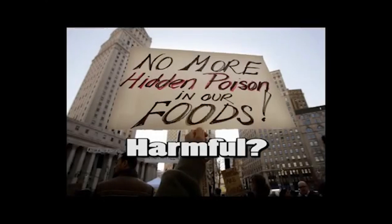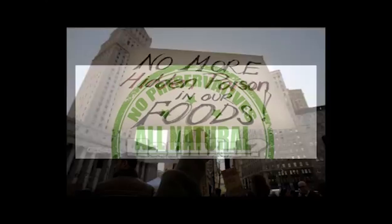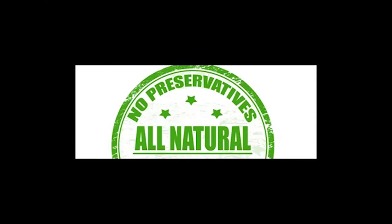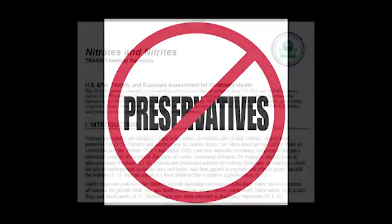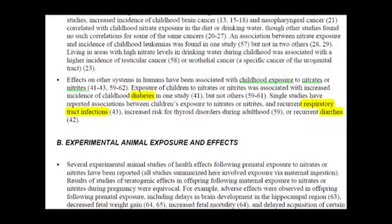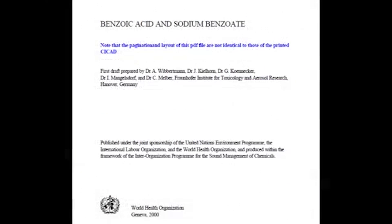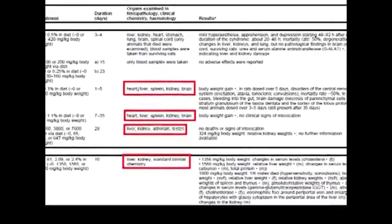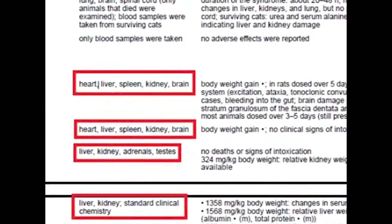The widespread use of preservatives has raised some health issues. Researchers showed that there are many negative effects of the use of preservatives. Nitrates and nitrites, which you'll find in bacon, ham and sausages, may increase the risk of diabetes, diarrhoea and respiratory tract infections in children. According to the World Health Organization, animal studies reveal that high doses of sodium benzoate may cause damage to the heart, spleen, liver, kidneys, brain and adrenal glands. When combined with vitamin C, sodium benzoate may pose a small risk of cancers, including leukemia.